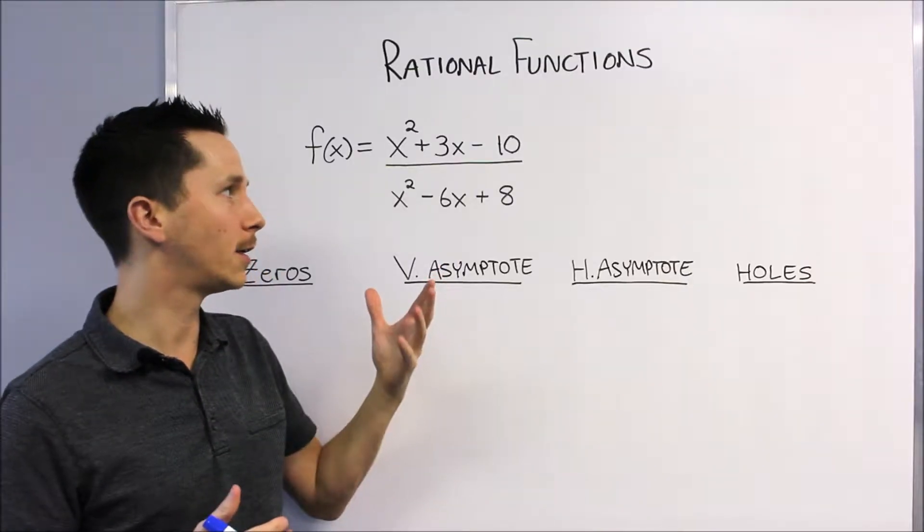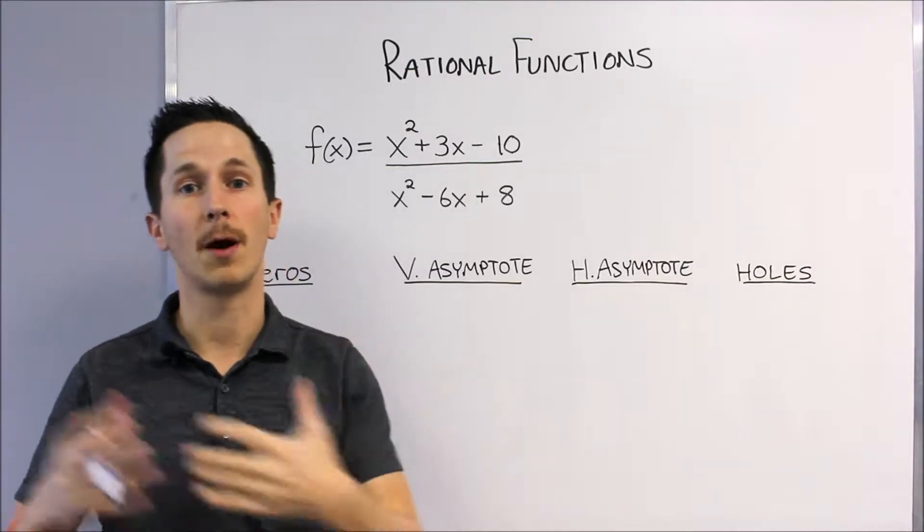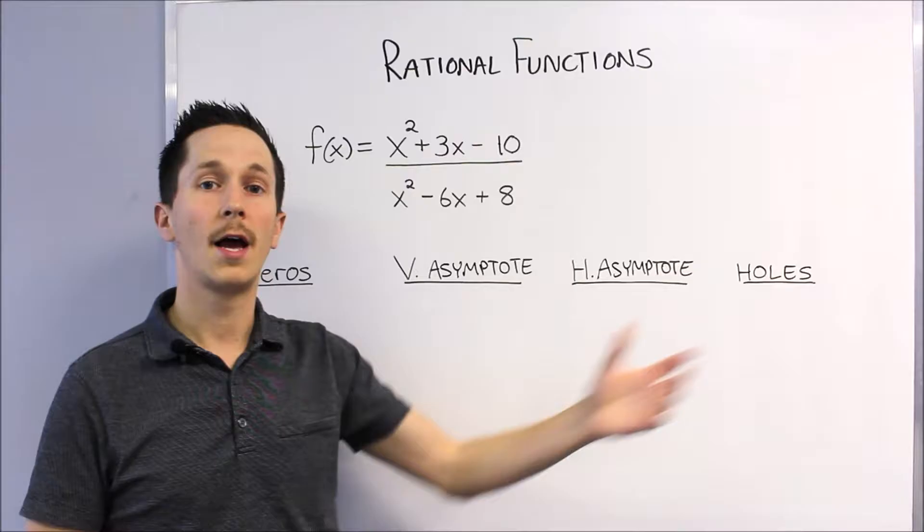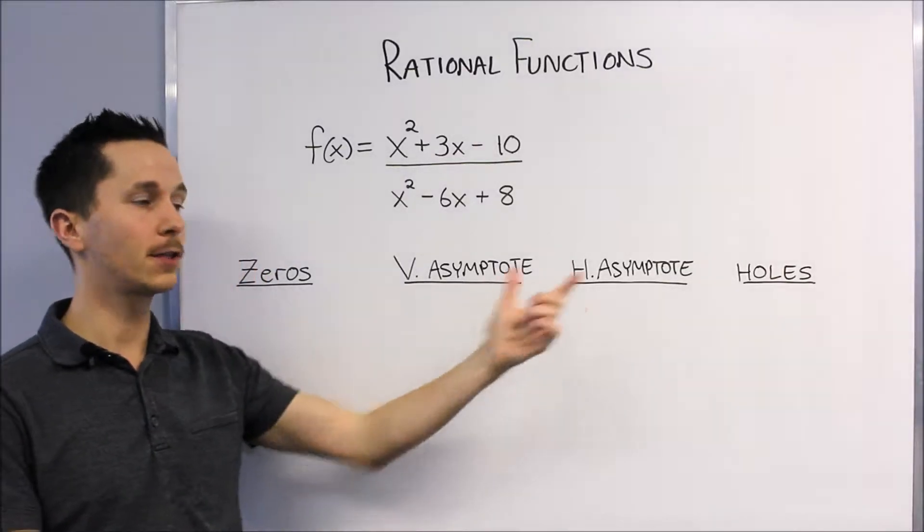So the only difference is now that we're dealing with the denominator, there's some other characteristics that come into play such as asymptotes and holes.